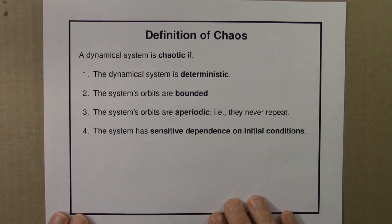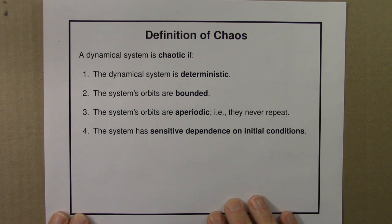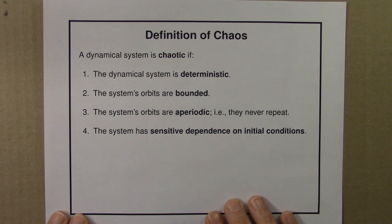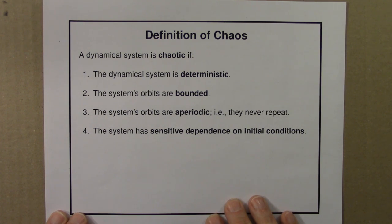There's lots more to say about the implications of sensitive dependence on initial conditions, and in general on chaotic dynamical systems. We'll talk about this in the rest of this unit and in many ways in the rest of the course. In the next set of lectures, I'd like to explore this idea that a deterministic dynamical system is capable of producing random behavior. In order to dig into this idea, we'll need to start by thinking about what it even means to call something random — so this will be the topic of the next lecture.